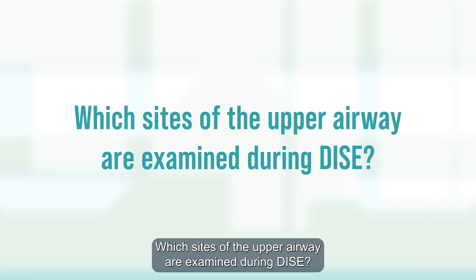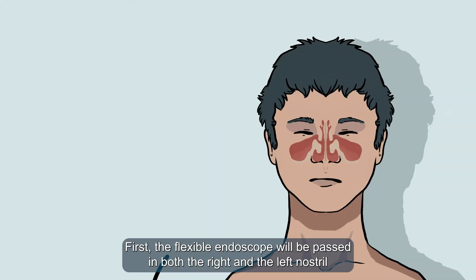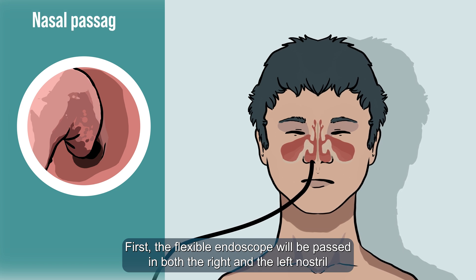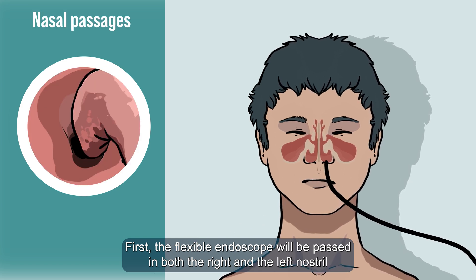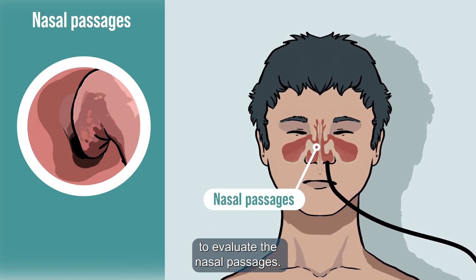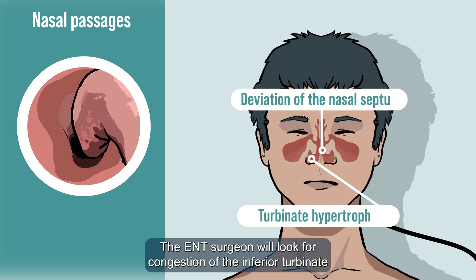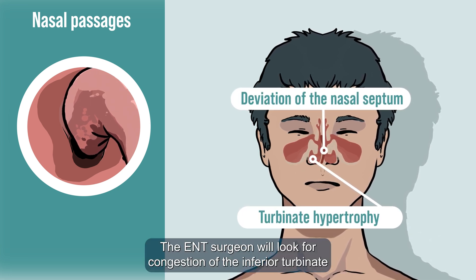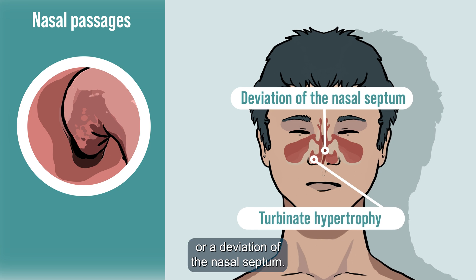Which sites of the upper airway are examined during DISE? First, the flexible endoscope will be passed in both the right and the left nostril to evaluate the nasal passages. The ENT surgeon will look for congestion of the inferior turbinate or a deviation of the nasal septum.